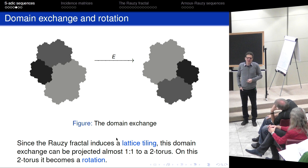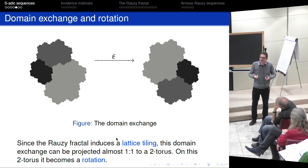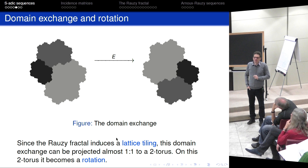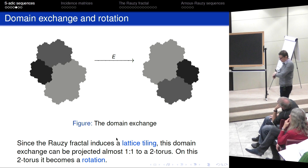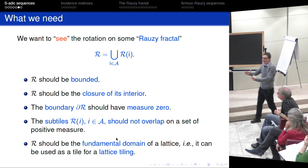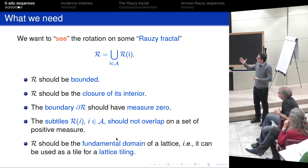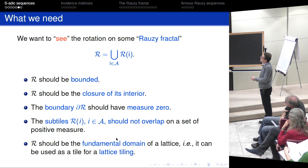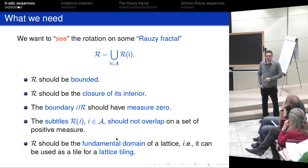We want to use the same idea in our more general setting. Rauzy only had one substitution and one single example. Since then, it was generalized more and more, mainly for cases where the set S contained only one substitution — the substitutive case. What we did is go one step further and handle S-adic sequences in the general sense I defined. Our main aim is to take a part of the proof: I'll talk about the Rauzy fractal and about how our Rauzy fractals have the required properties under certain conditions.